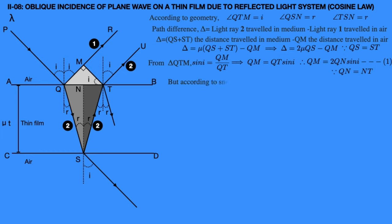According to Snell's law, mu equals sin I divided by sin R, which can be written as sin I equals mu sin R. Substituting sin I into equation 1, we get QM equals 2 mu QN sin R. Assume this is equation 2.